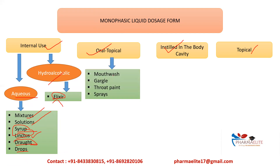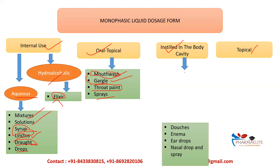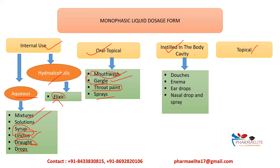For oral topical preparations: mouthwash, which is mostly used for cosmetic purposes, and gargles, mostly used for therapeutic purposes. Both are available in concentrated form so we have to dilute them. Then throat paint, which has to be applied with a brush. Then sprays. These are the oral topical forms we covered previously.